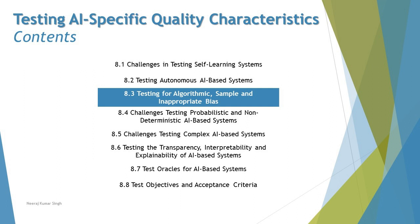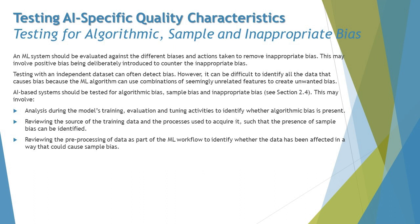Continuing ahead with the next segment, which is 8.3: how to test for algorithmic, sample, and inappropriate bias. To talk about these three things, we need to understand a little more from the recollection of Chapter 1. When it comes to an ML system, it should be evaluated against different biases, and actions taken to remove inappropriate biases. Biases here refer to the difference between the expected and the actual outcome.